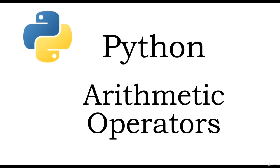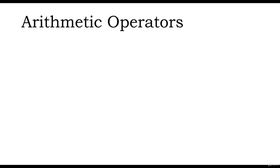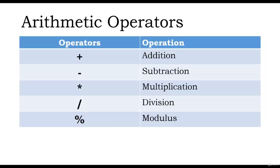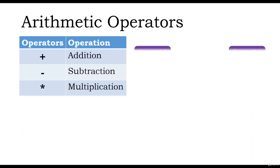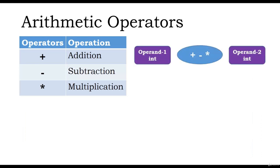We will now cover the arithmetic operations that can be performed on numbers using arithmetic operators. The addition, subtraction, multiplication, division and modulus operators are also present in other programming languages. The integer division or floor division operator and exponential operator is only available in Python. So in all, there are 7 arithmetic operators available in Python. Expressions consist of a combination of operands and operators that evaluates to a value.